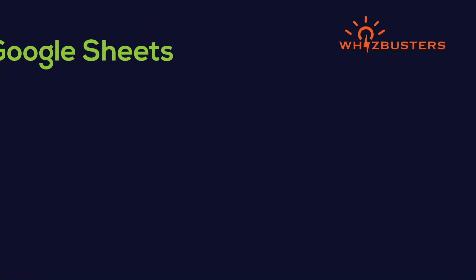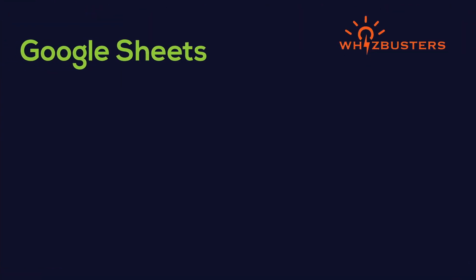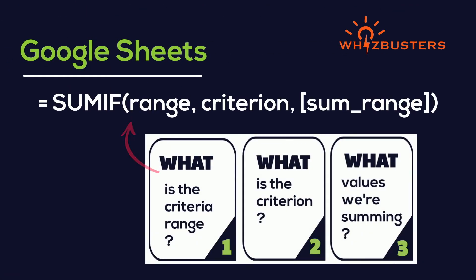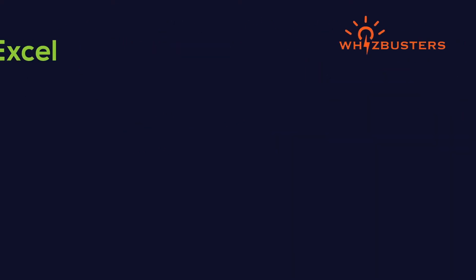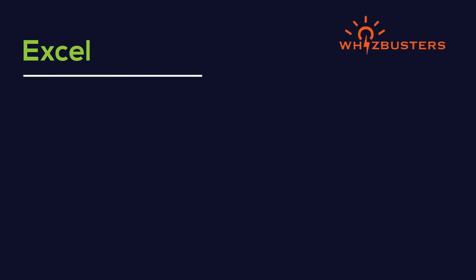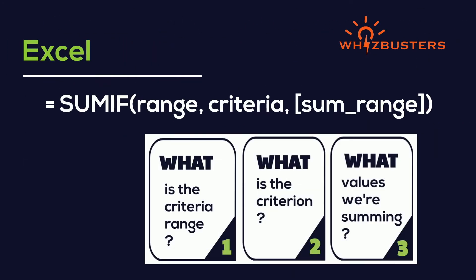In Google Sheets, you will see SUMIF with parameters: range, criterion, sum range, while in Excel you'll see SUMIF with: range, criteria, sum range. So let's dive into examples to see what I mean.